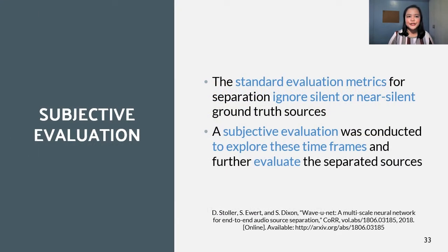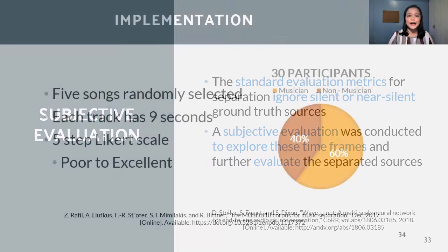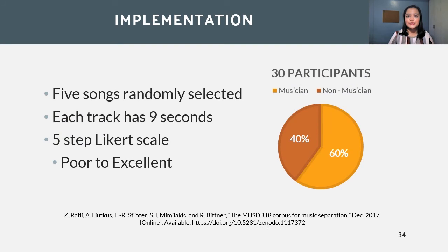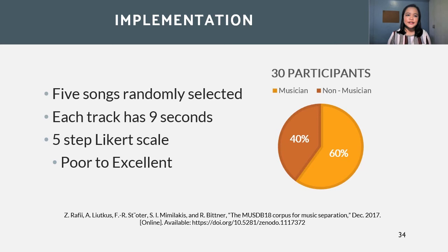The standard evaluation metrics for separation ignore silent or near-silent sound sources. With this in mind, a subjective evaluation was conducted to explore these timeframes and evaluate how acceptable the separated sources were. The survey consists of five songs with a nine-second length track, randomly selected from the test data of MusicTV18. The participants were asked to rate the tracks on a five-step Likert scale ranging from poor to excellent. A total of 30 participants answered the survey; 60% know how to play an instrument, while 40% are non-musicians.